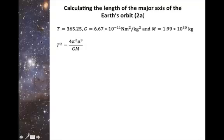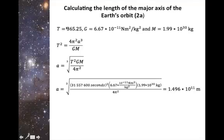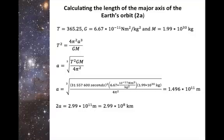We can isolate for a, and then we can substitute in this information. Note that I converted our period to seconds just so that everything cancels out, and our final answer is in meters. So the length of the major axis of the Earth's orbit is therefore 2.99 times 10 to the 8 kilometers.